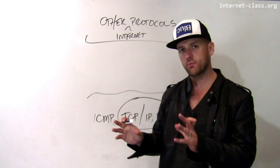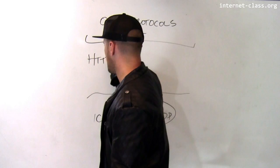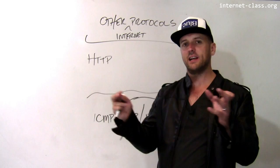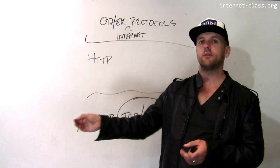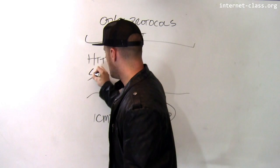Most of the interesting stuff happens at the application level, and here's where protocols live that you might already be familiar with. For example, HTTP — this is the core protocol used on the World Wide Web, and it's now finding its way to lots of other places as well. HTTP provides a way for a client to request a document or some information from a server, post information, and other types of things.